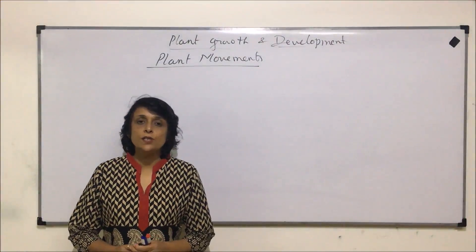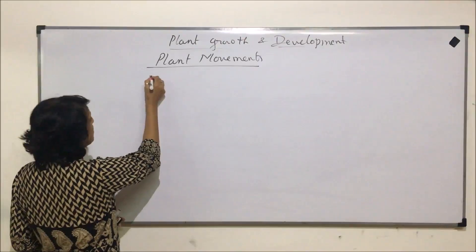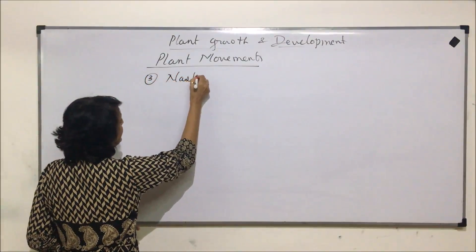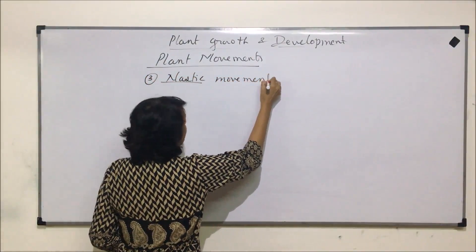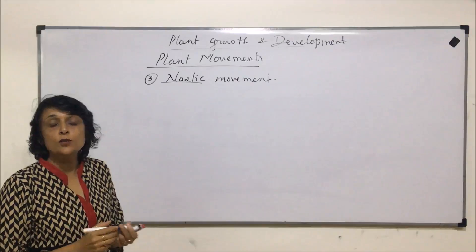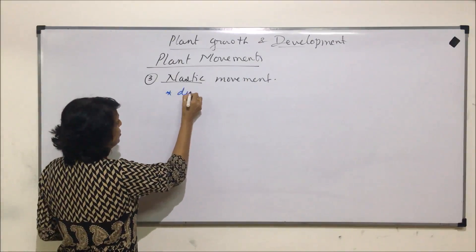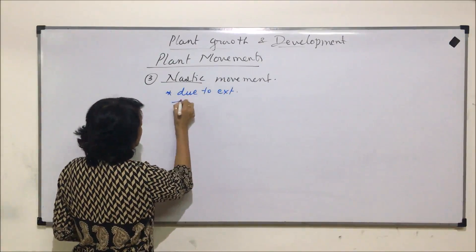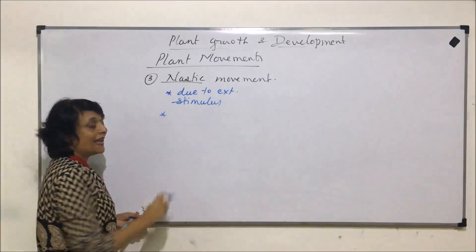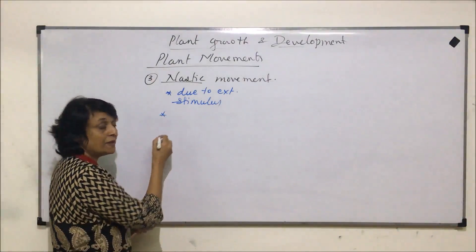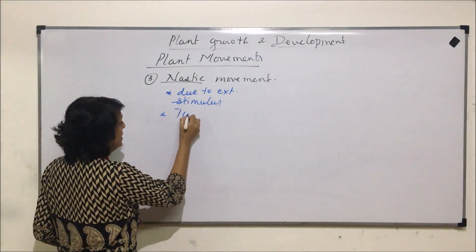In this section we'll discuss the third type of movement, that is nastic movement. Nastic movements are in response to external stimuli, so they are due to external stimulus. These are turgor movements, meaning they occur due to endo or exosmosis.